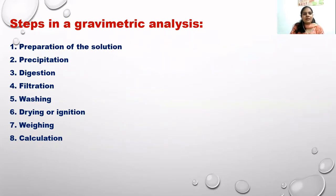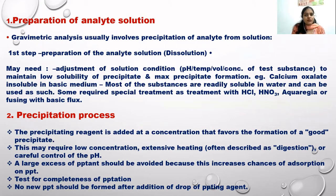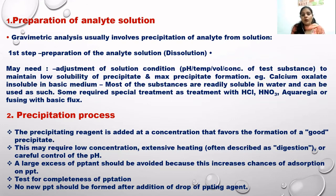Now coming to the experimental steps: first is preparation of the solution, then precipitation, then digestion, and we'll discuss all these one by one. For preparation, the analyte solution must be dissolved in a suitable solvent — generally water — and sometimes adjustments to pH, temperature, and concentration are needed. For our syllabus, we dissolve 15 to 20 grams of the analyte in one liter of solution to make the test solution.